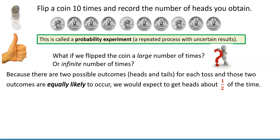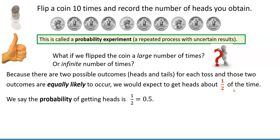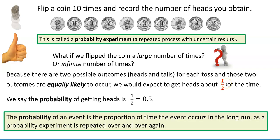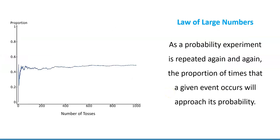Because there are only two possible outcomes — heads or tails — for each toss, and those outcomes are equally likely, they are equally likely to occur. We would expect to get heads about half of the time. Half is written as a fraction, one half. We can say that the probability of getting heads is one half or 0.5. The probability of an event is the proportion of time the event occurs in the long run as the probability experiment is repeated over and over again. This is called the law of large numbers.